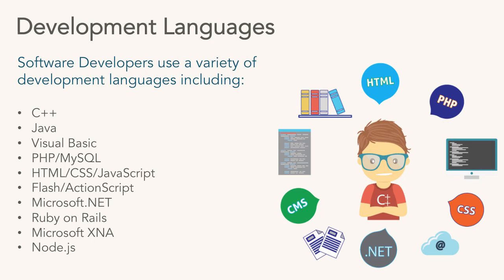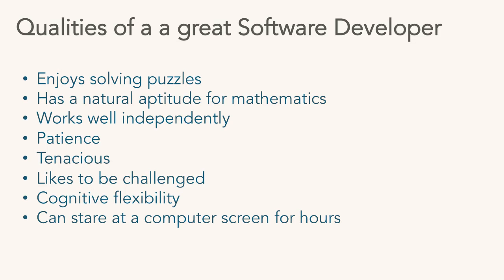Ruby on Rails is big for mobile — there's a huge demand right now for Ruby developers. Microsoft XNA, and Node.js, which is changing things significantly in the marketplace — it's a completely different way of doing computing. But if you're looking to jump in and learn the fundamentals to start becoming a web developer, look at Ruby, HTML, CSS, and JavaScript. Those will give you the fundamentals to get started really quickly.